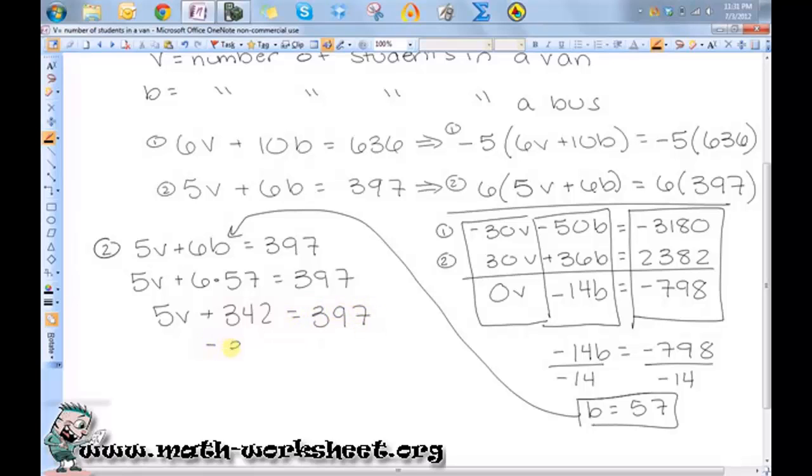So if I subtract 342 from both sides, I'll get 5v is equal to 55. And then divide both sides by 5, I get v is equal to 11.